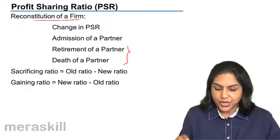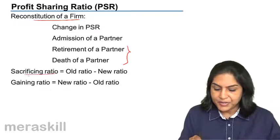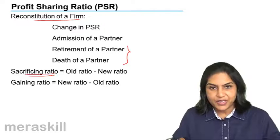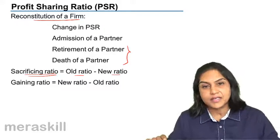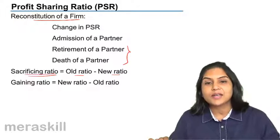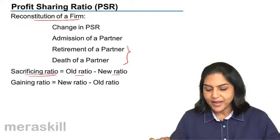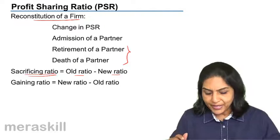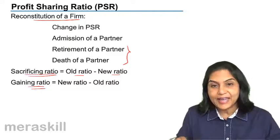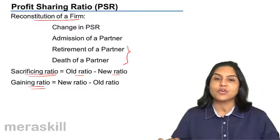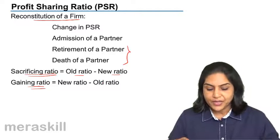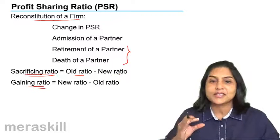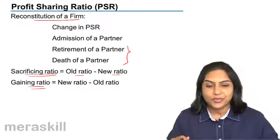When there is a change in profit sharing ratio, there would be some partner who stands to lose — who sacrifices. The old ratio minus the new ratio is called the sacrificing ratio. On the other hand, if the new ratio is higher, then we have a gaining ratio: the new ratio minus the old ratio. The sacrificing ratio and gaining ratio are used particularly in the valuation of Goodwill.